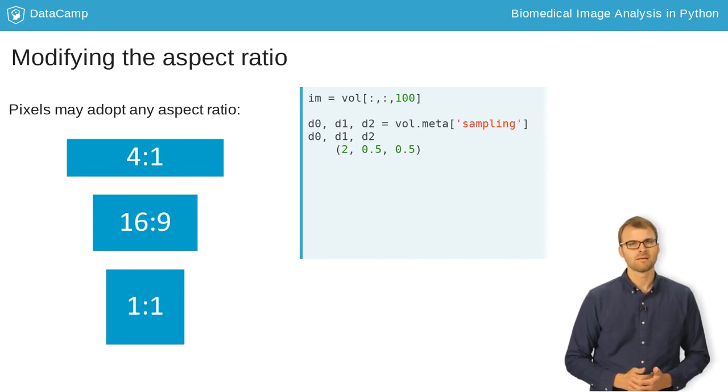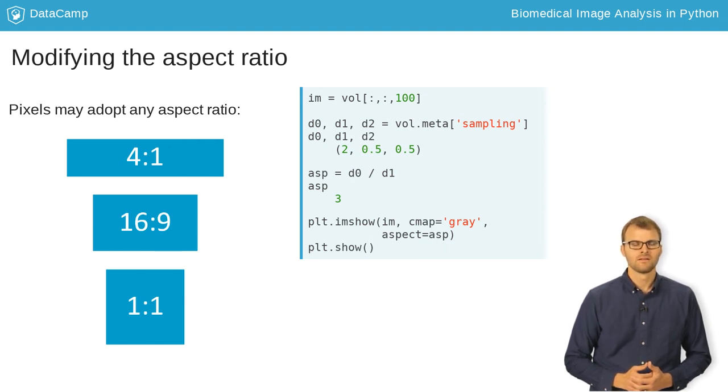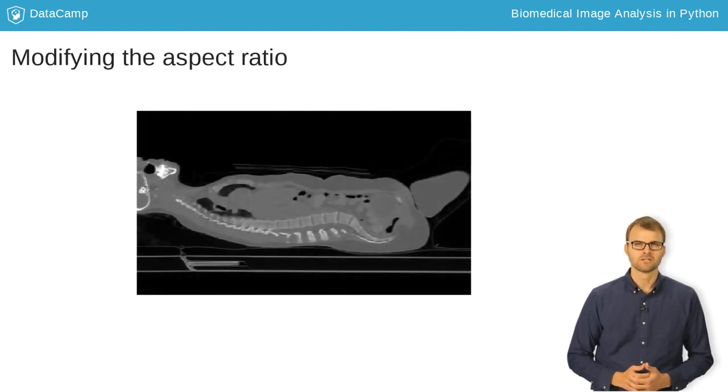To determine the aspect ratio, we first get the sampling rates along each dimension from the metadata dictionary. Then, we divide the sampling rate of the first dimension by the sampling rate of the second. When we call imshow, we pass this ratio to the aspect argument.